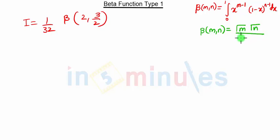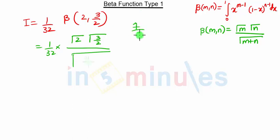So we get gamma of 2 times gamma of 3/2 upon gamma of 2 plus 3/2, which is nothing but 7/2. What is gamma of 2? Gamma of 2 is nothing but 1.